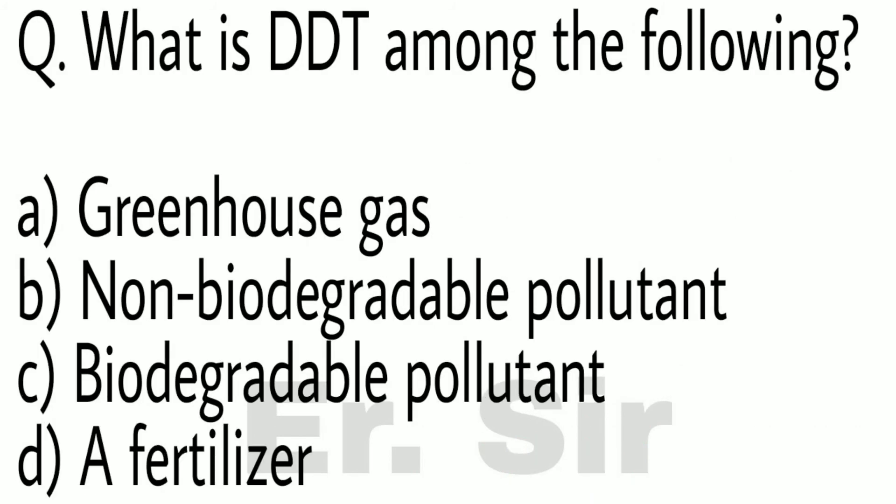What is DDT among the following? (A) Greenhouse gas, (B) Non-biodegradable pollutant, (C) Biodegradable pollutant, (D) Fertilizer. The correct option is B: Non-biodegradable pollutant.